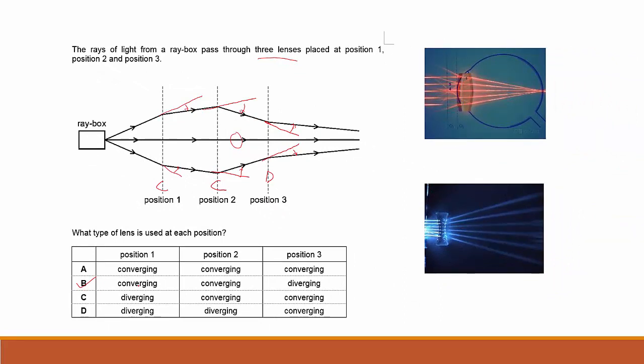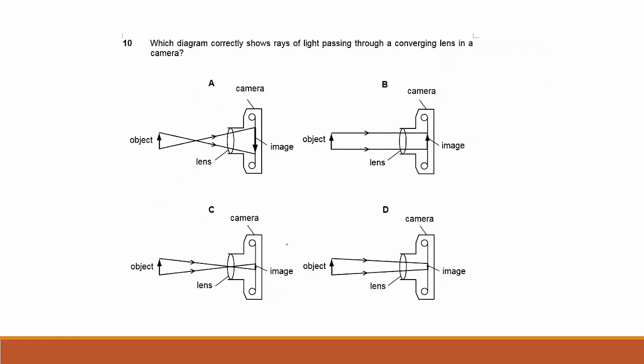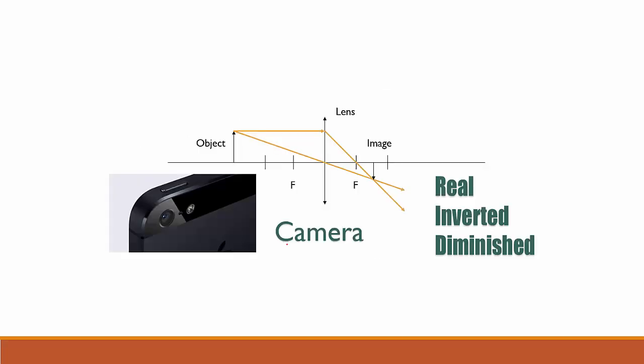Which diagram shows rays of light passing through a converging lens of a camera? We have to remember how a camera image looks like. A camera would have these characteristics: real, inverted, and diminished, meaning smaller. You have a big object that becomes smaller. If we look back, you'll find that only C fits this category because it is smaller.